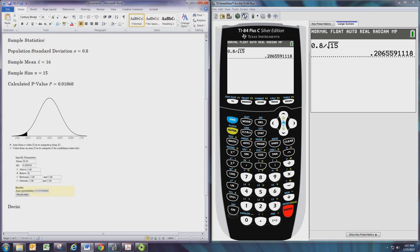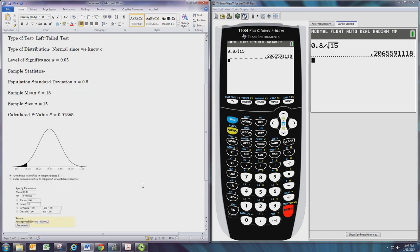Next we'll make our decision. For the decision we will compare the p-value with the level of significance. The p-value is 0.01868, approximately. The level of significance is 0.05.